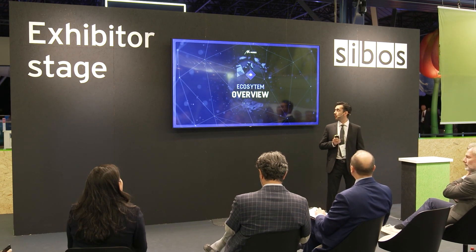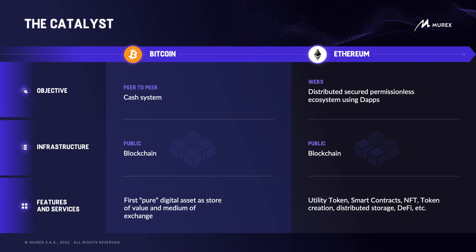Starting with the most important catalyst: Bitcoin, which started in 2009. It was the first peer-to-peer cash system deployed on a public blockchain, using Bitcoin as its fuel. Bitcoin is the first pure digital asset as a store of value and medium of exchange. It was meant only for that at the beginning.